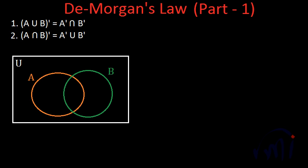In this video we are going to learn about De Morgan's Law — this is part one. We are going to discuss two expressions. The first expression says the complement of A union B is equal to the complement of A intersection the complement of B. The second rule says the complement of A intersection B is equal to A complement union B complement. We are going to prove these using Venn diagrams.